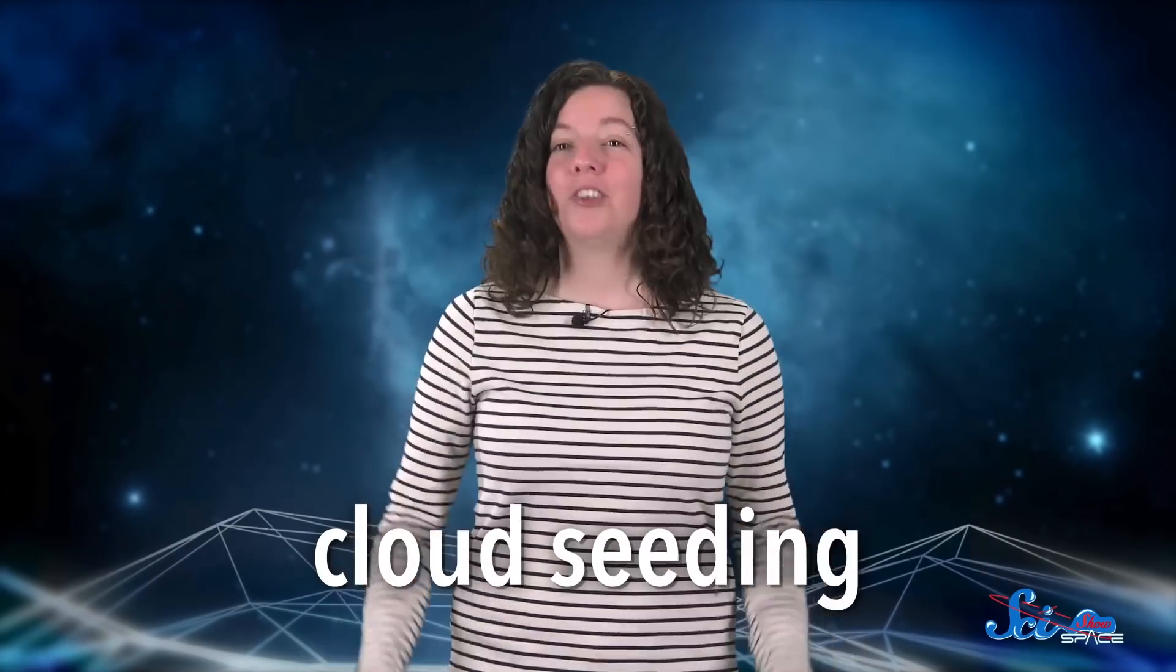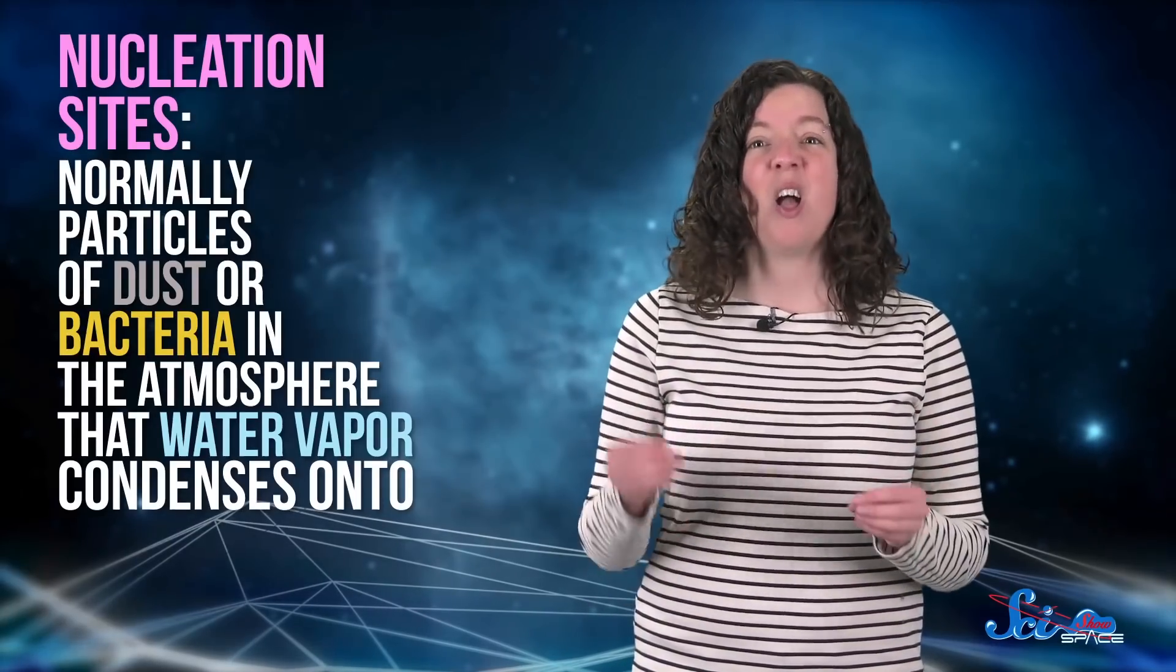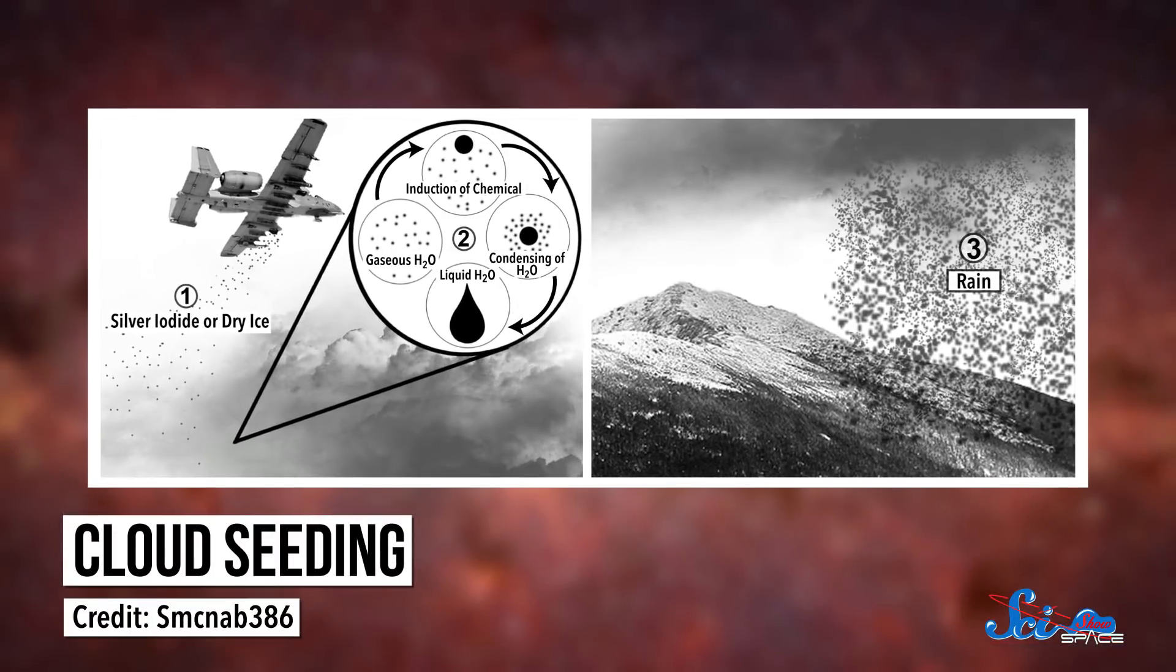The most widespread and successful example of us manipulating the weather is cloud seeding. Raindrops form on what are called nucleation sites, which are normally particles of dust or bacteria in the atmosphere that water vapor condenses onto.